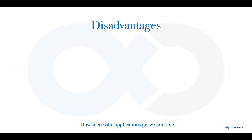Now you might say this looks awesome — why would we ever want to move away from this architecture? There are plenty of disadvantages that appear after a certain point of time. Let's talk about how successful applications grow over time. WhatsApp, Facebook, Twitter, LinkedIn, Uber, Netflix, Airbnb — all of these companies pioneered microservices architecture but were all using a monolithic architecture at some point. Think of microservices as the solution to monoliths.